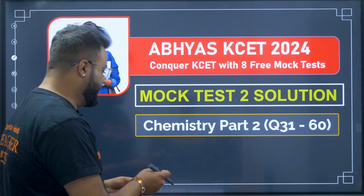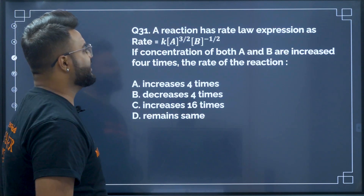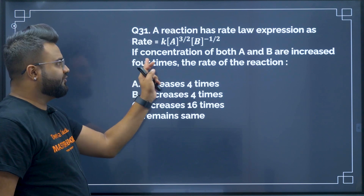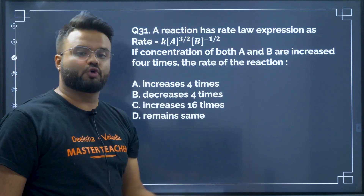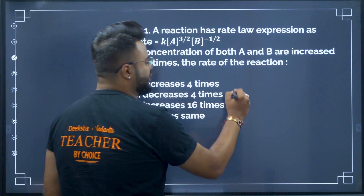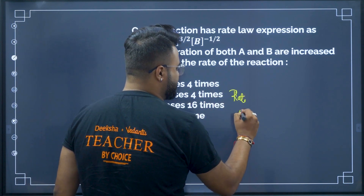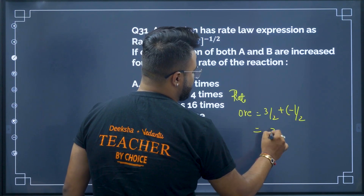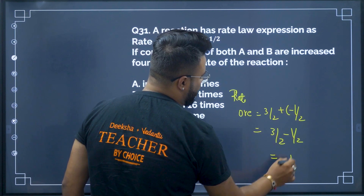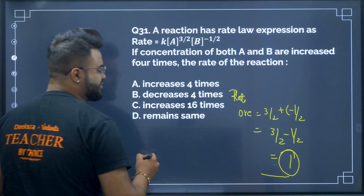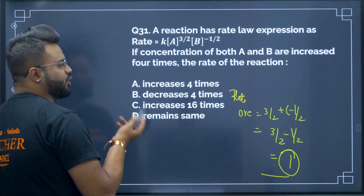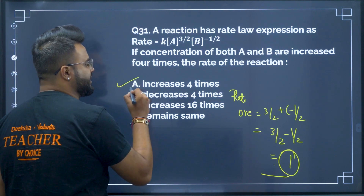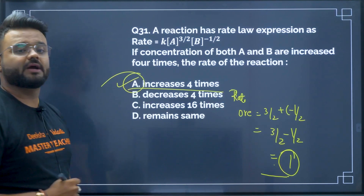Now let us go on to question number 31. The reaction has a rate law expression. If the concentration of both A and B are increased 4 times, what is the rate of the reaction? The order is 3/2 + (−1/2) = 1, therefore it is a first order reaction. In a first order reaction, if both concentrations are increased 4 times, the rate of the reaction also increases 4 times. So option A is the correct answer.